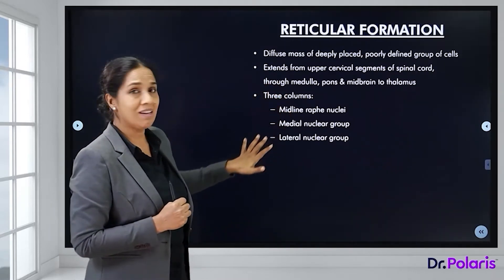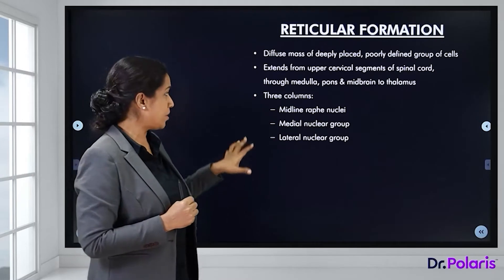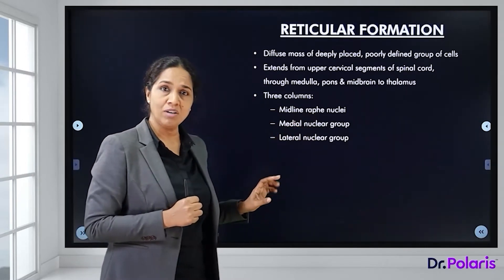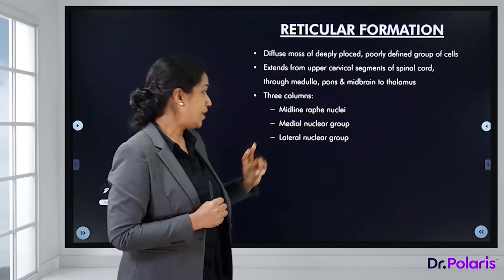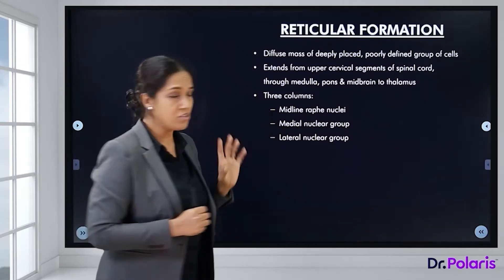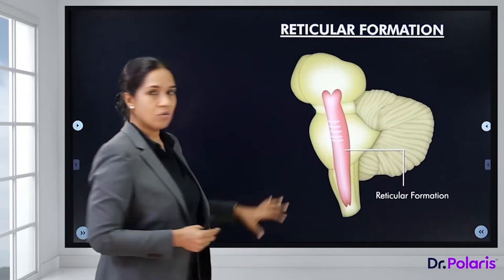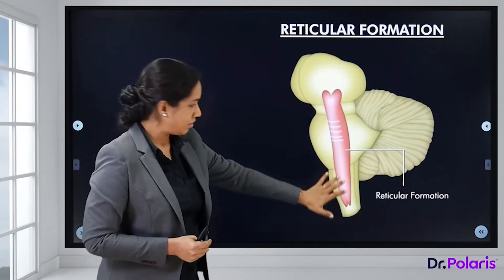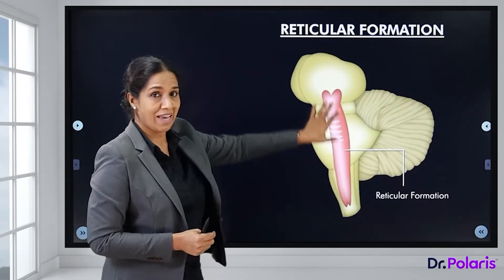In terms of extent, the reticular formation extends from the upper cervical segment of the spinal cord, passing through the medulla, pons, and midbrain to the thalamus. So it consists of diffuse, deep cells without a proper definition.